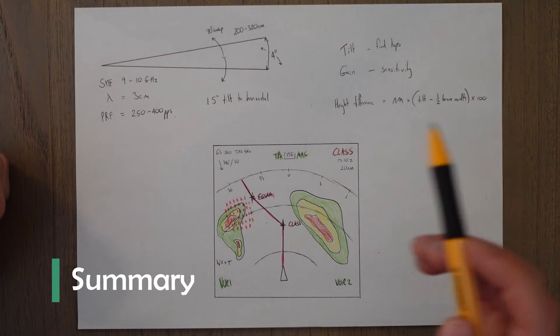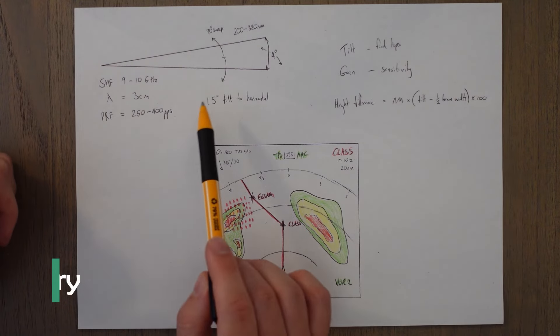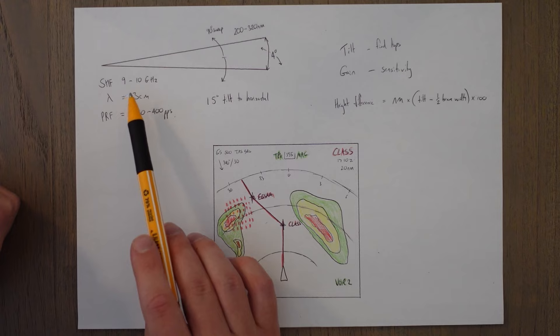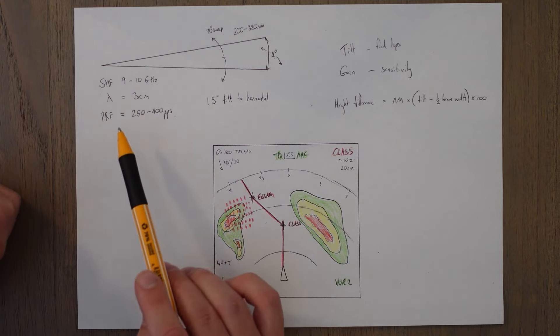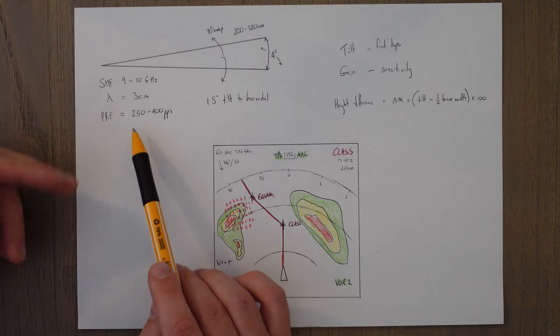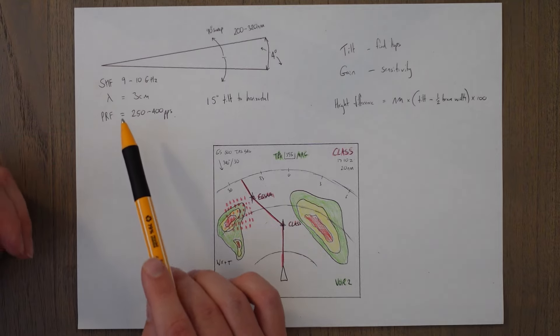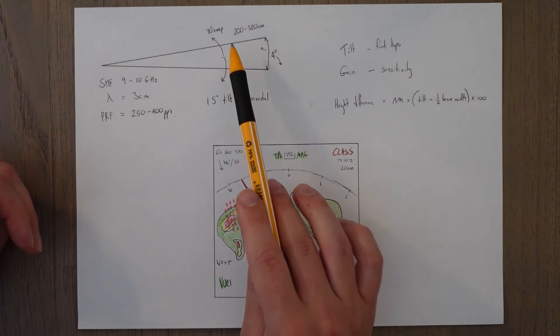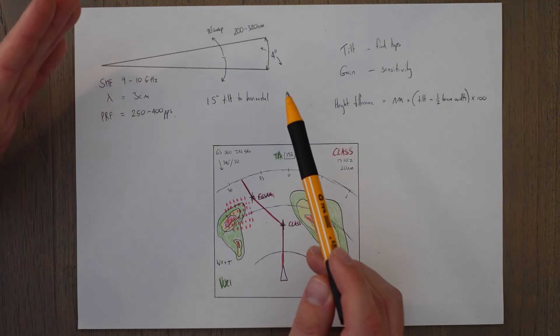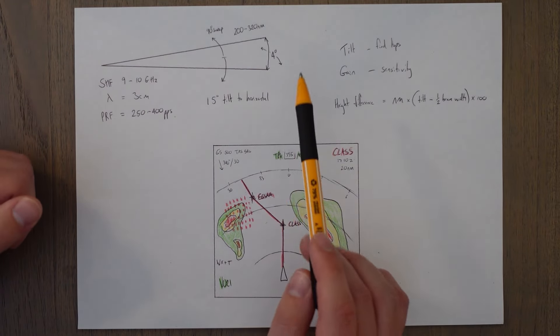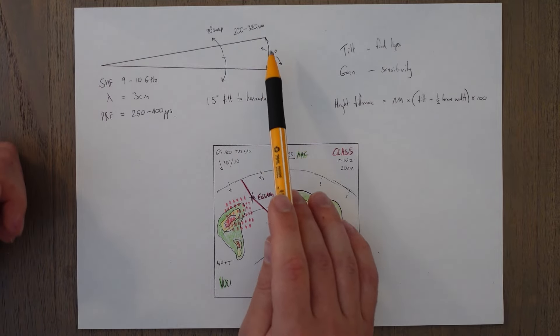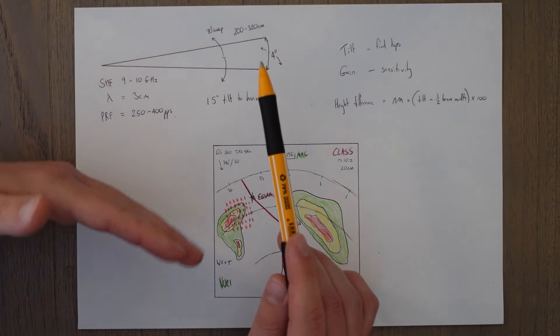So a nice quick class there. In summary our beam that is fired out of an airborne weather radar out of a slotted array antenna is between 9 and 10 gigahertz, its wavelength is about 3 centimeters and its pulse recurrence frequency is about 250 to 400 pulses per second which gives it a range of 200 to 320 nautical miles. We can tilt it 15 degrees up or down to the horizontal and the beam itself is a cone shaped about 4 degrees wide and 4 degrees tall and it can be swept back and forth 90 degrees electronically to produce a nice wide 180 degree vision of the sky ahead of us.